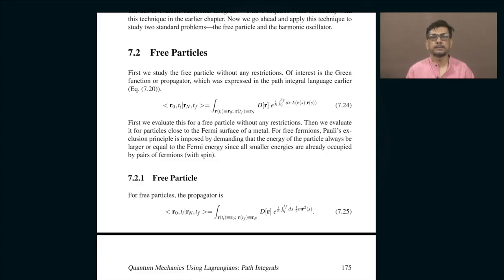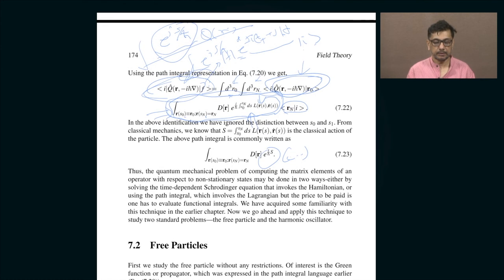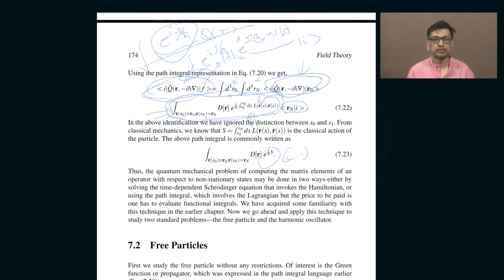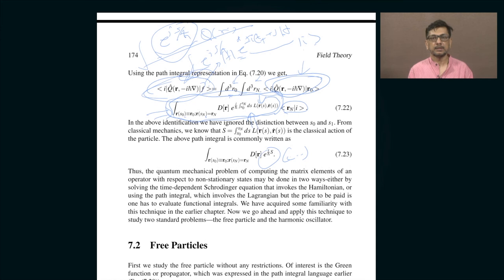In today's class let us discuss the application of this path integral formalism. If you recall in the last class I stopped where I showed that you can find the quantum mechanical overlap of any operator. Suppose you want to find the matrix element of some operator called Q between two states, initial and final, where the final state is obtained by time evolving the initial state from the initial time to the final time.